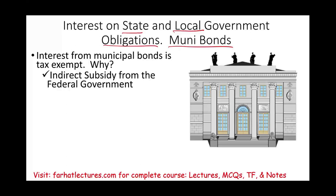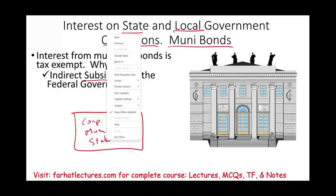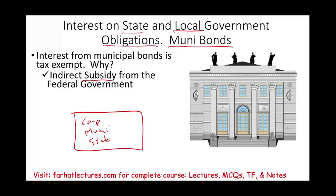Let's start by discussing the why — why is municipal bond interest tax exempt? It's a form of indirect subsidy from the federal government. Municipalities and state governments are in competition with corporations when borrowing money. Because the federal government doesn't want to keep financing state and local government, they told investors: if you lend money to state government and municipalities, there are no taxes on your interest. So it's an incentive to lend your money to state and municipal governments.